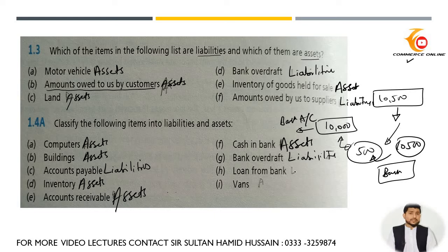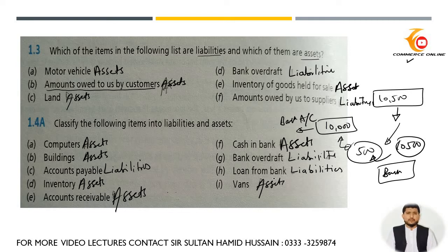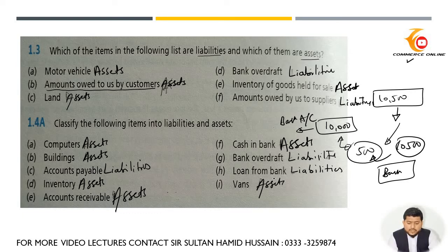Loan from bank is a liability. If you want to know what accounts come under assets or liabilities, go to my channel's accounting playlist where I have mentioned different kinds of assets — fixed assets and current assets — and I have also explained liabilities, equity accounts, and income, revenue, and expense accounts.